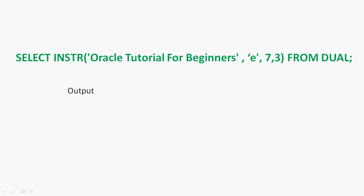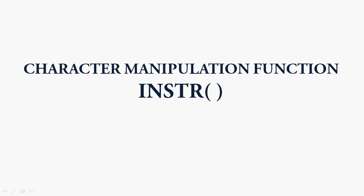Question of the day: SELECT INSTR('oracle tutorial for beginners here', 'e', 7, 3) FROM DUAL — what is the output? Please write your answer in the comment section. In this video we have seen the character manipulation function INSTR. If you have any doubts or suggestions, please comment below. In the next video we will see the character manipulation function SUBSTR.